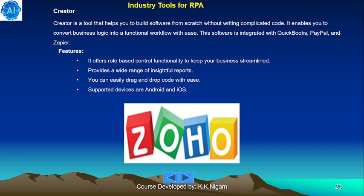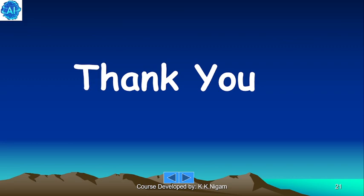Creator is a tool that helps you build software from scratch without writing complicated code, enabling you to convert business logic into functional workbooks with ease. It integrates with QuickBooks, PayPal, and Zapier. Features include role-based control and functionality to keep business streamlined, a wide range of insightful reports, easy drag-and-drop functionality, and support for Android and iOS devices. Thank you.